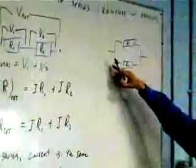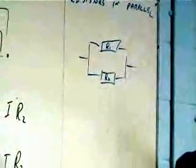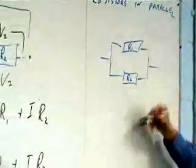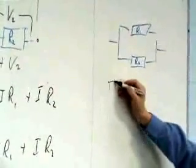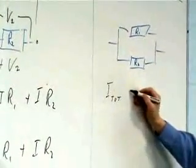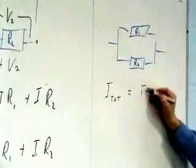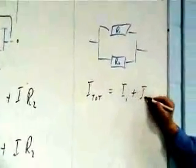In this case, what stays the same and what changes? V is the same. V stays the same. And what can I say to begin with? I can say the total current I equals V over R. But before I get there, I_total is going to be what? I1 plus I2.